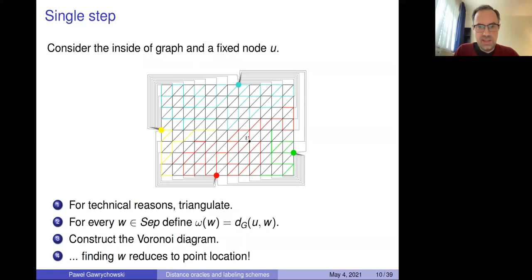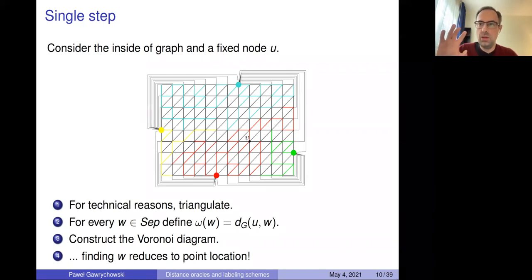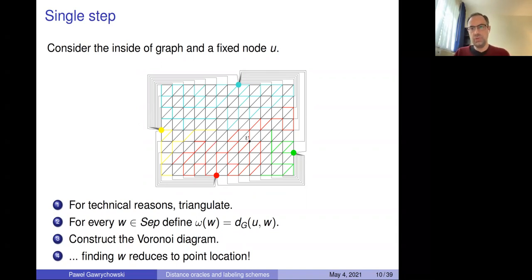Finding w reduces to a point location query: given node v, find which Voronoi cell it belongs to — that cell's site is exactly w. In the plane you'd have cells and find which cell a point lies in. On a planar graph, the cells are connected fragments of the graph. The edges of the shortest path trees define the Voronoi boundaries, and those trees cannot intersect — a property of shortest path trees in planar graphs.